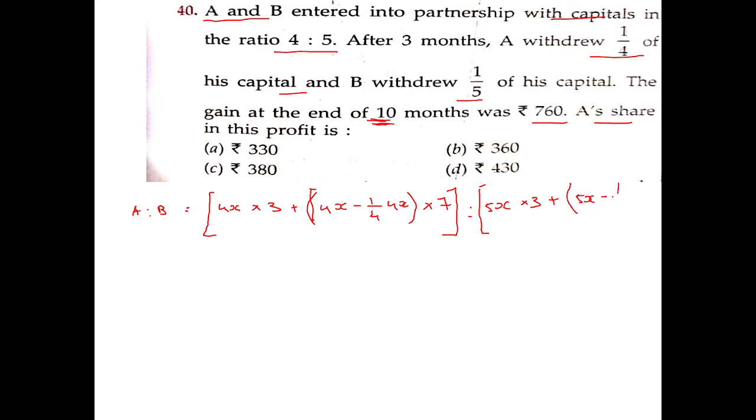For B, 5x minus 1 by 5 of 5x, multiplied by 7 because it is 7 months. It is the investment of 5x. We can get 1 by 5. We can get the investment of 7.